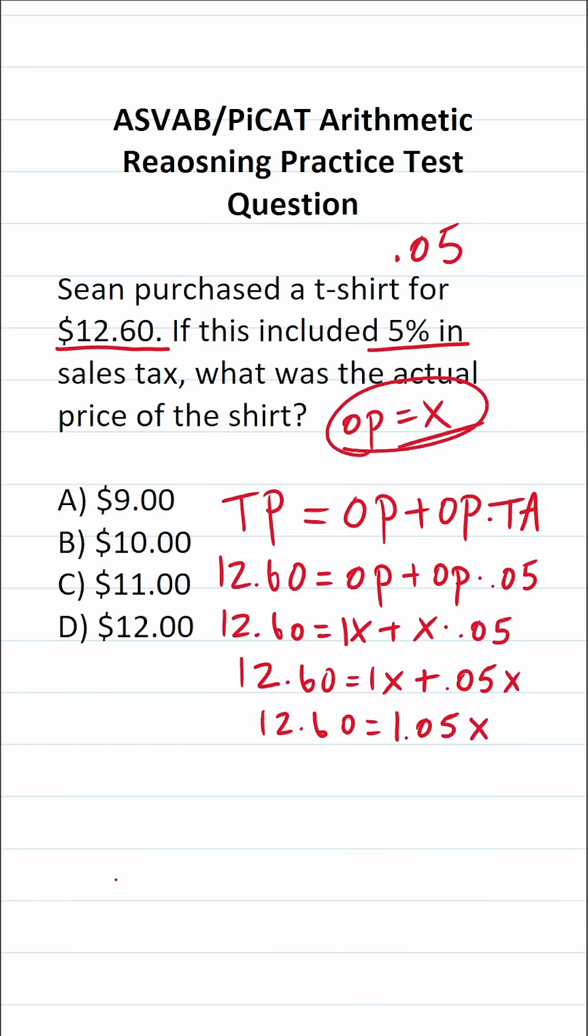Again, we let x be the original price of the shirt. So now all we have to do is solve this equation for x. And I know many of you could have jumped to this step right here. I just wanted to go through the logic as to how we get to this point.